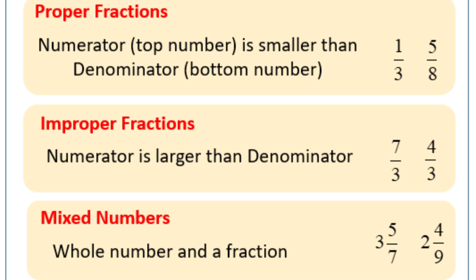In improper fractions, the numerator or the top number will be greater than the denominator or the bottom number. Here you can see in the examples 7 by 3 and 4 by 3, the numerators are greater than their denominators, so they are improper fractions.